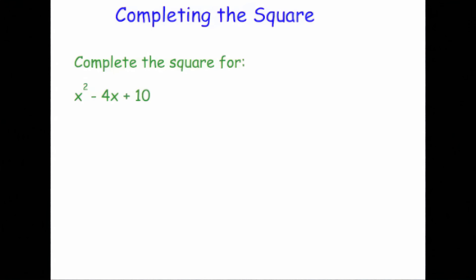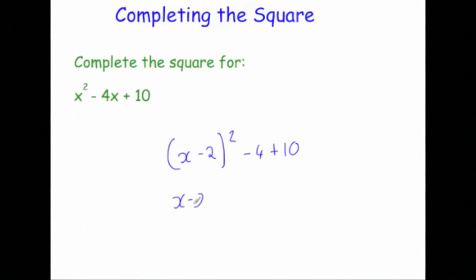Let's complete the square for x squared minus 4x plus 10. Because it's x squared you put x down, and because it's minus 4 you write minus 2, squared. Now minus 2 squared is 4, so you take away 4 — you always take away that number squared, and minus 2 times minus 2 is 4. Then put on the plus 10. Simplifying: x minus 2 squared, and minus 4 plus 10 is 6, so plus 6.